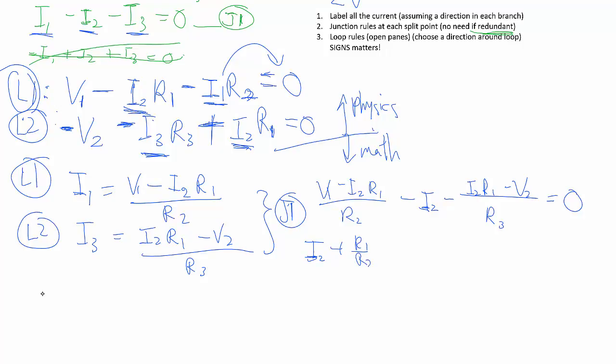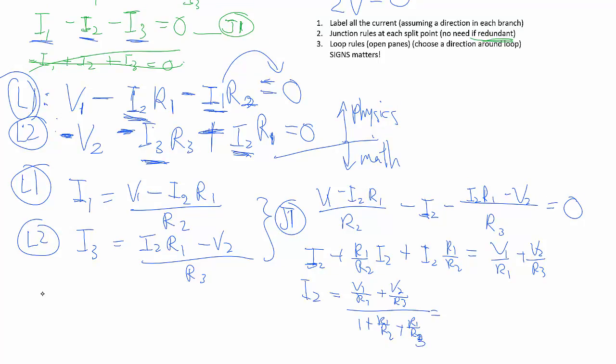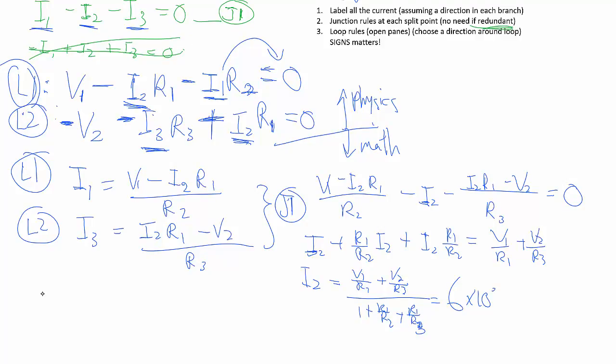So we try and expand and collect like terms, putting everything with I2 on the one side. Be careful with all the various negative signs that are lurking about. Then of course, the I2 factors out and you get to solve for I2. Plugging in the numbers and remembering that the kilo ohm means a thousand ohms, 0.6 milliamps. Then once we have this number, we plug it back into here and here to get my I1 and I3. More calculator work, and you will get 0.4 milliamps and negative 0.2 milliamps.